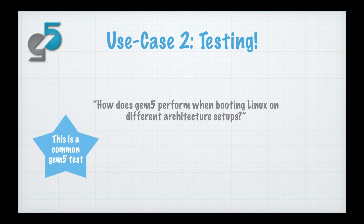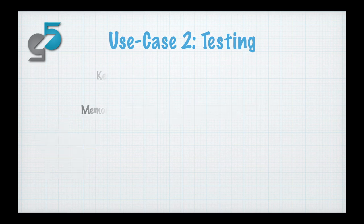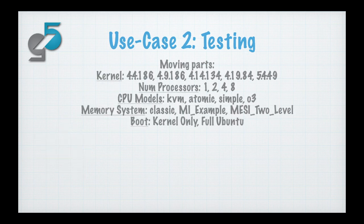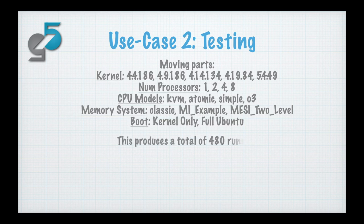There are a lot of parameters here. We test across five different kernels, one, two, four, and eight CPUs, four different CPU models, three different memory systems, and essentially two different types of this test — booting the kernel only or booting the full Ubuntu operating system. The cross product of this makes for 880 runs. For each of these runs, we want to check whether there's success, there's an error in GEM5, or whether there's a kernel panic.